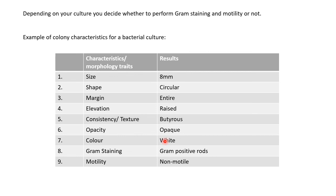After studying all characteristics, you make a table and note down all the characters with your results. For example, for a Bacillus culture: size 8 mm, circular shape, entire margin, raised elevation, butyrous consistency, opaque opacity, white color, gram-positive rods, non-motile. Depending on the species, characteristics may differ.